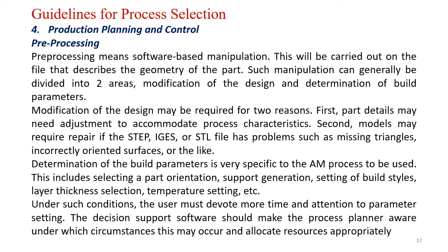Pre-processing means software-based manipulation, carried out on a file that describes the geometry of the part. Such manipulation can generally be divided into two areas: modification of design which may be required, and determination of build parameters. Under modification of design, the first reason is we need to find out whether any adjustment is needed to accommodate process characteristics like tolerances, size, and fits. Second, models may require repair work in the STL or IGS file — these files may have problems such as missing triangles or incorrect orientation of surfaces.